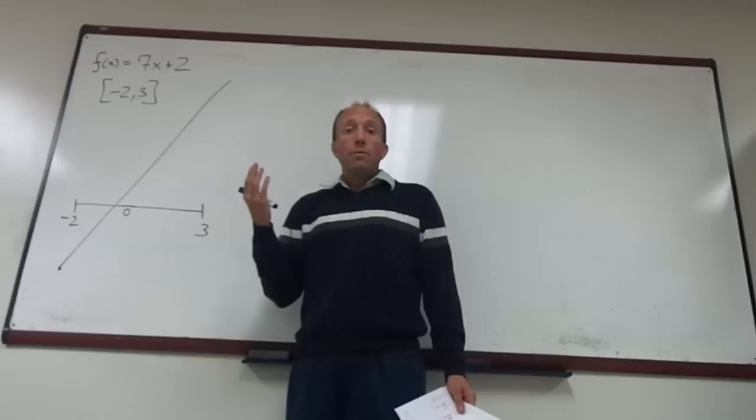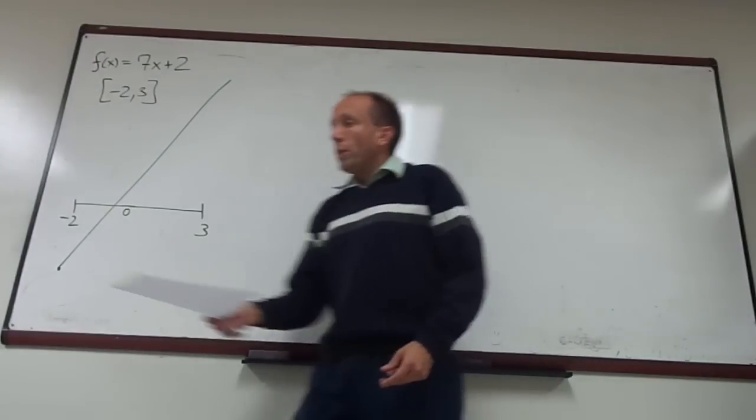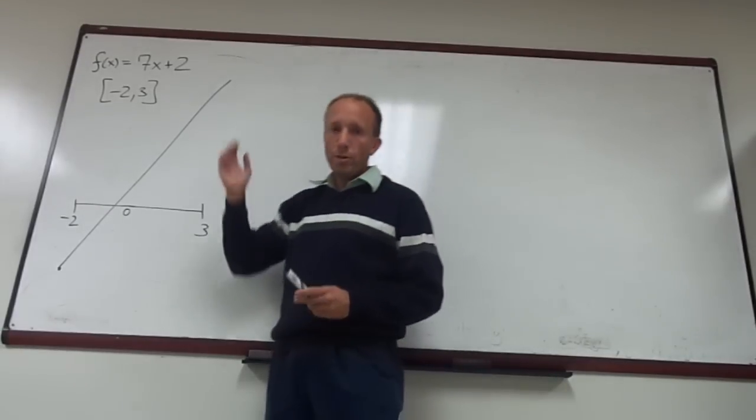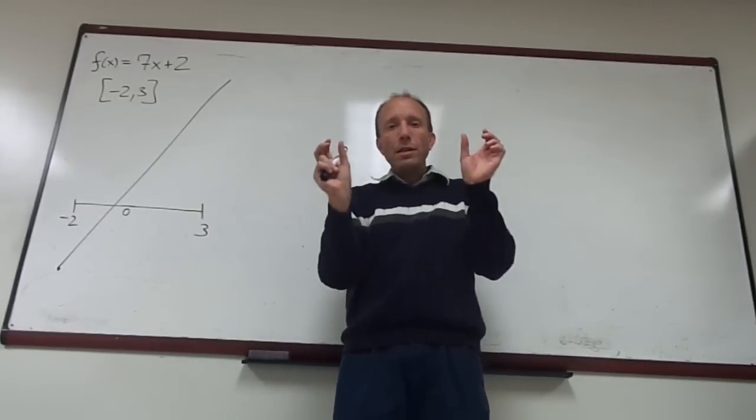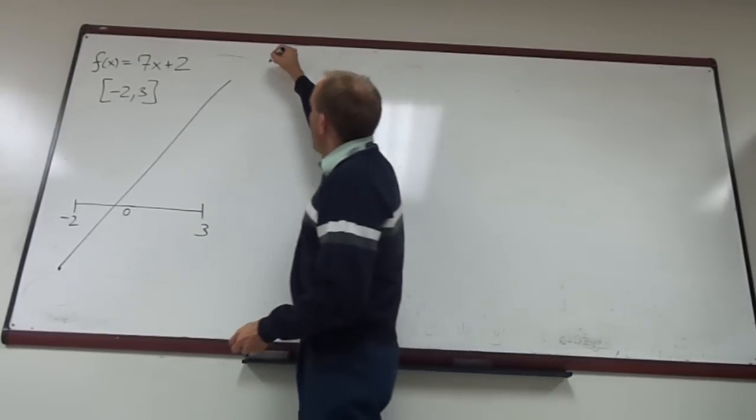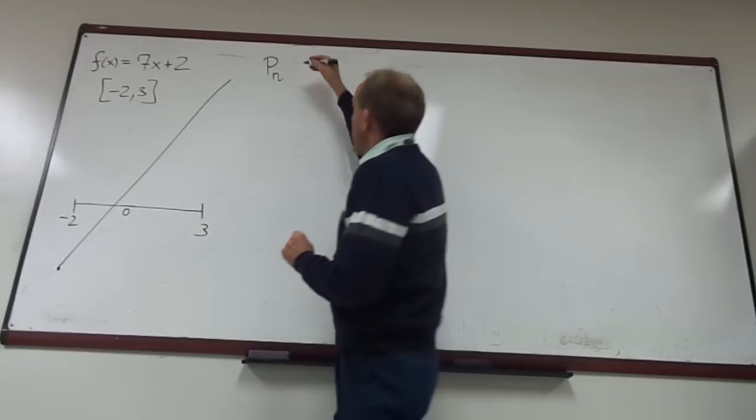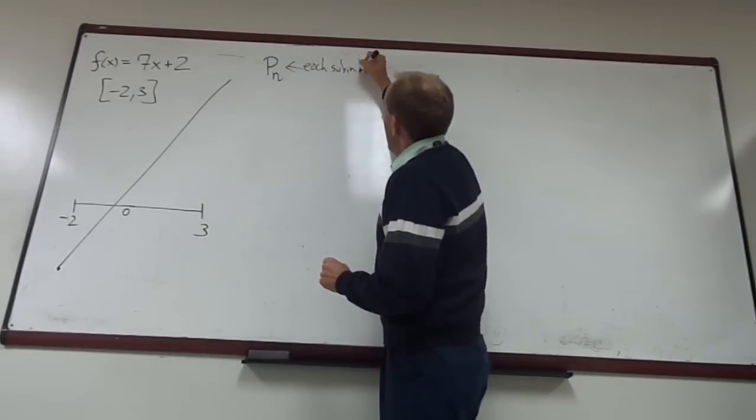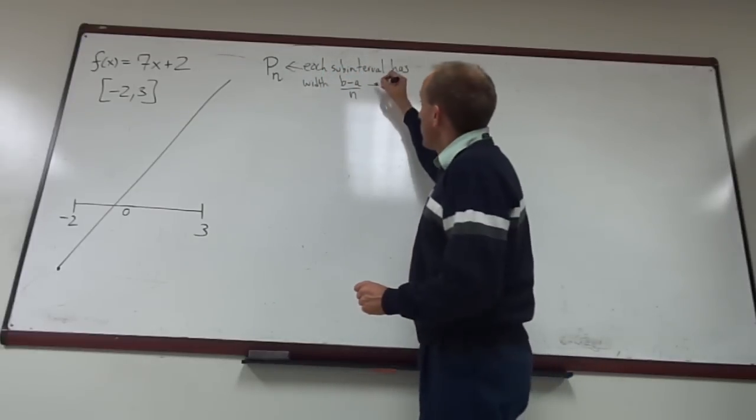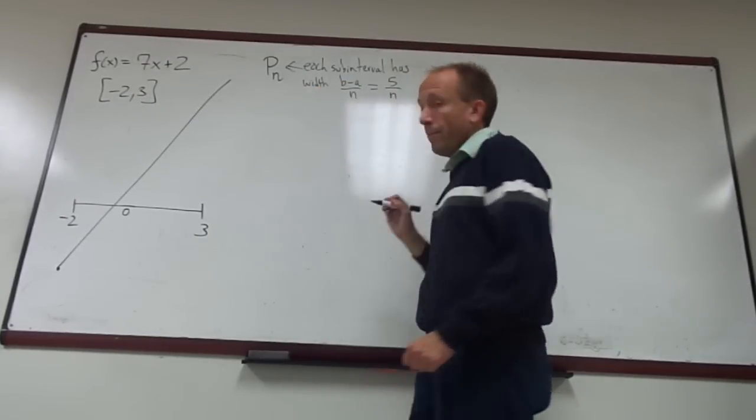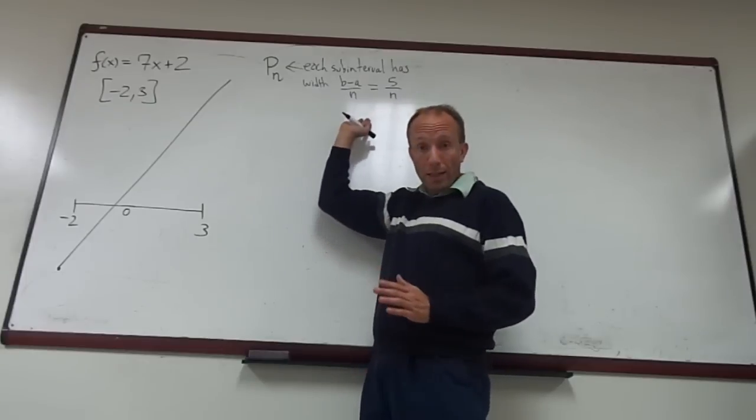Let's suppose we want to calculate first of all if f is Riemann integrable and if it is, the value of the integral. One thing we can sometimes do to decide if the function is Riemann integrable is to consider a partition of this interval into segments that are equal width to one another. There's a name for that and it's written as P sub n, and this is a partition into n pieces that has every single subinterval of the same width.